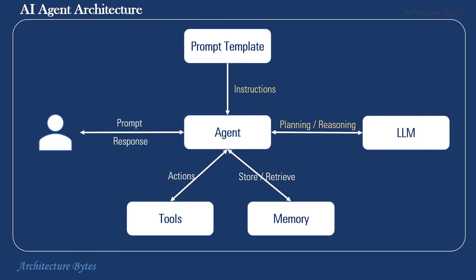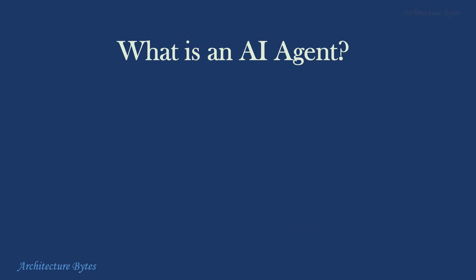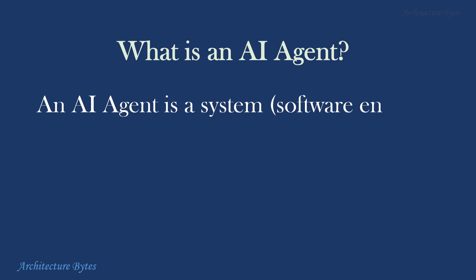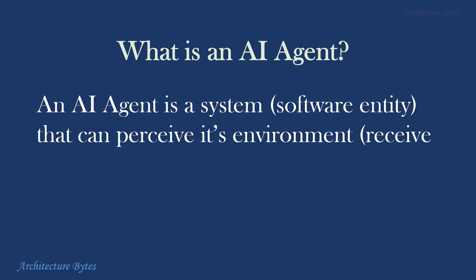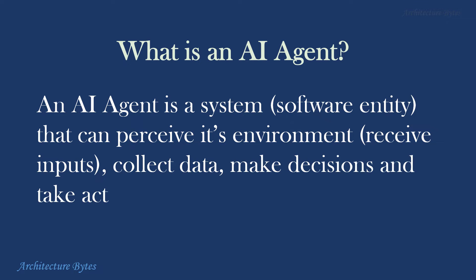Note that it is the advanced prompting techniques with instructions that enable LLMs to engage in planning, reflection, and exhibit basic reasoning skills. Now we can answer this question: What is an AI agent? An AI agent is a system that can perceive its environment, collect data, make decisions, and take actions.